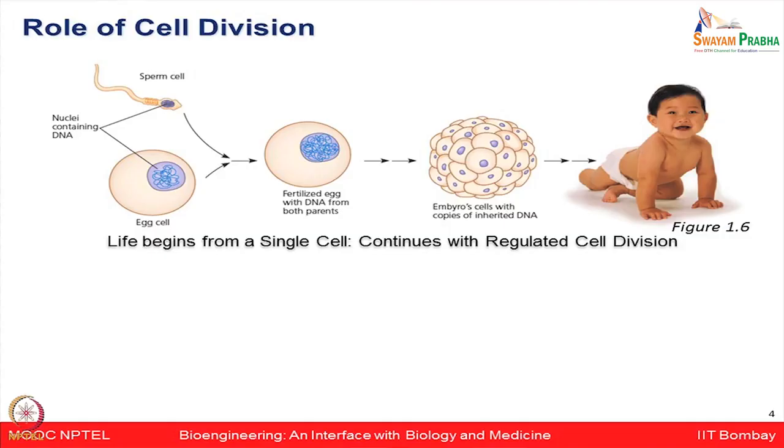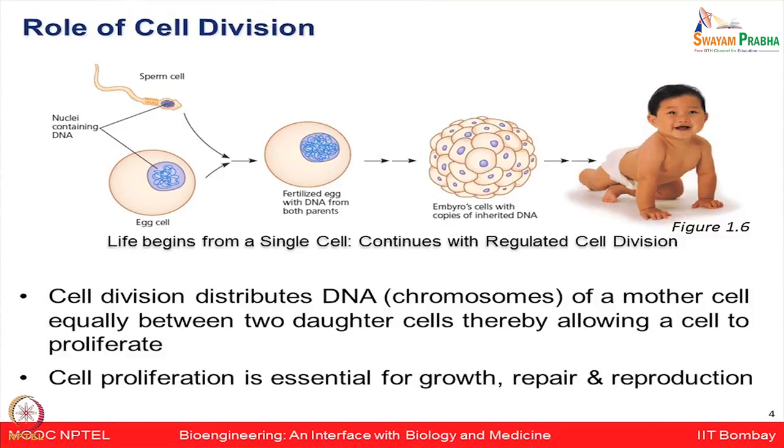Let us first start with cell cycle. Life begins from a single cell — starting from the sperm and egg cell, their fusion in the process of fertilization gives rise to the embryo, and from that one cell, after continuous division, life starts. Cell division distributes the DNA of a mother cell equally between two daughter cells, allowing a cell to proliferate. This cell proliferation is very crucial for growth, repair, and the reproduction process.